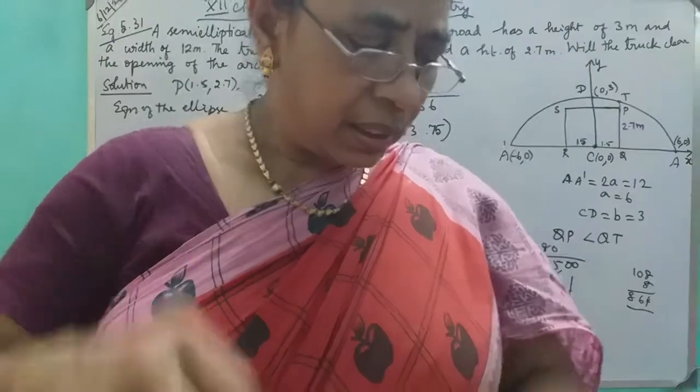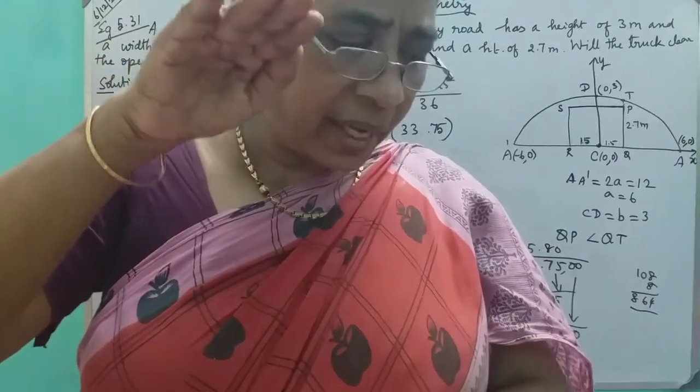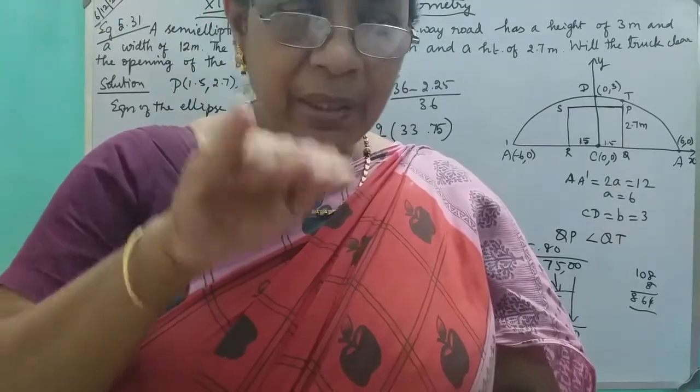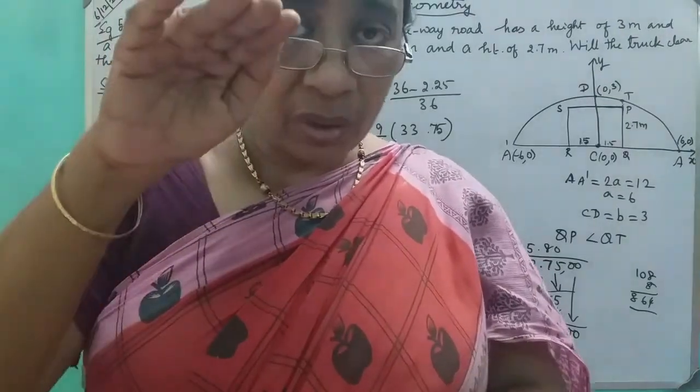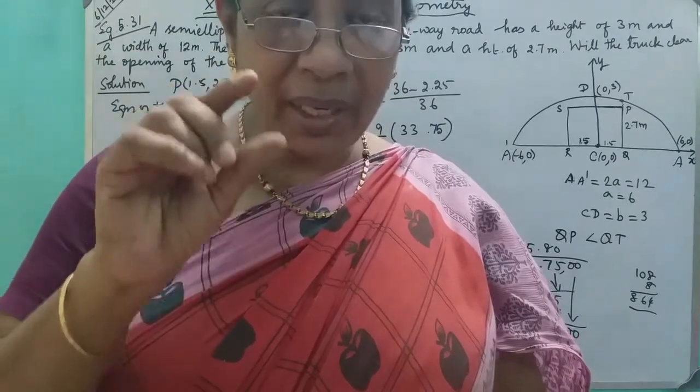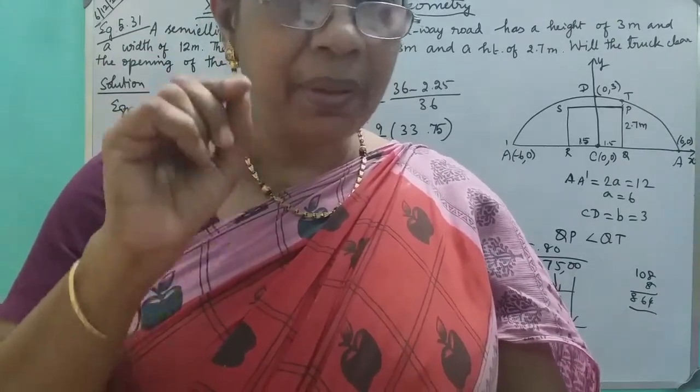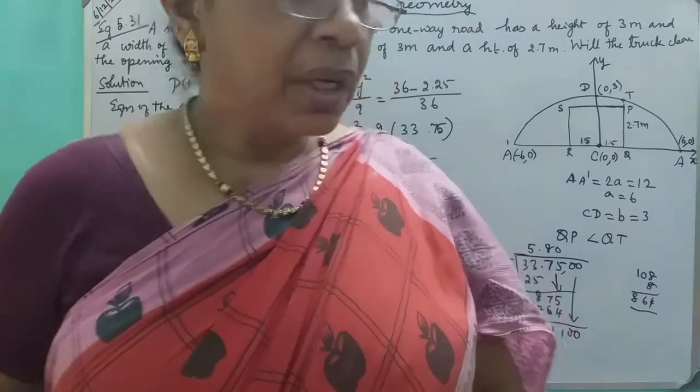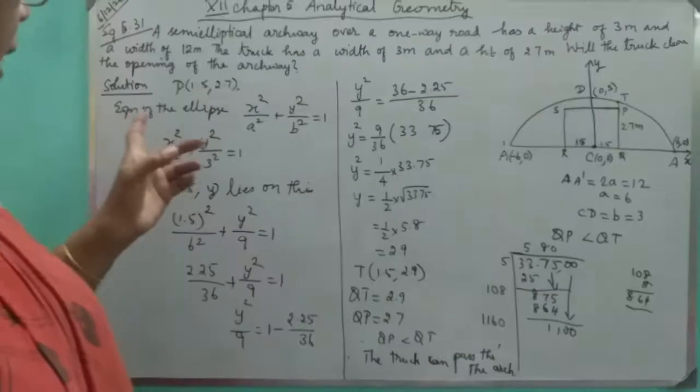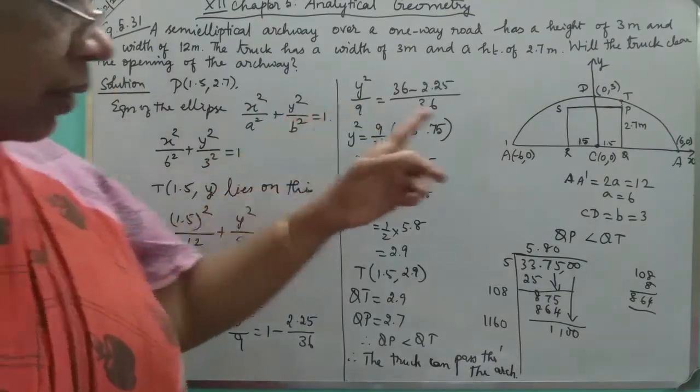The height is 3 meters. For a semi-ellipse, the height is the semi-minor axis, which is B. So B equals 3. A is 6, B is 3.